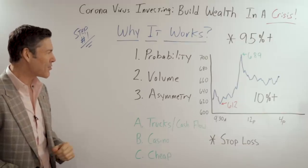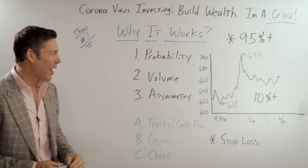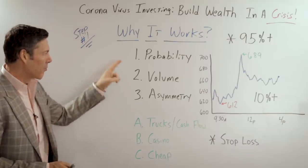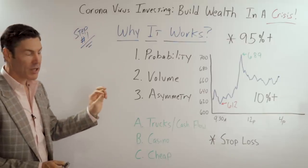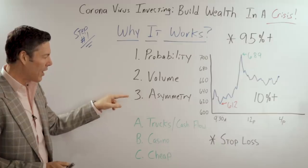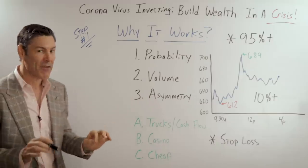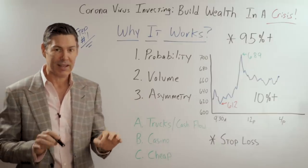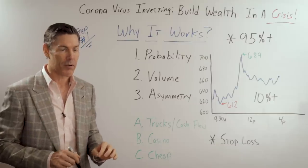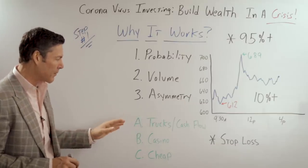There are three main metrics we're looking for when analyzing a potential investment or speculation: probability, volume, and asymmetry. I've got several videos that take a deep dive on this — we'll put links in the description below. Just a brief overview today.